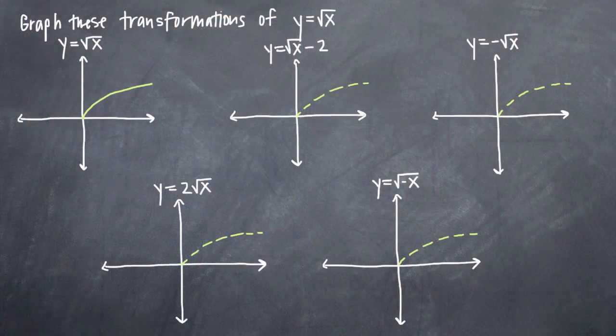In this particular problem, we've been asked to graph various transformations of the function y equals the square root of x. We're going to be looking at four basic transformations, but remember that there are many types of transformations. The purpose of graphing these four in particular is to start getting comfortable with transformations.